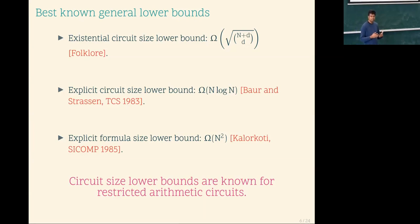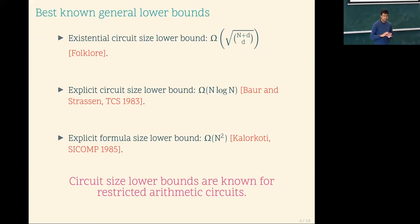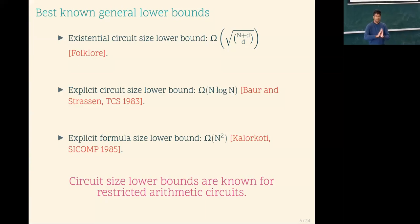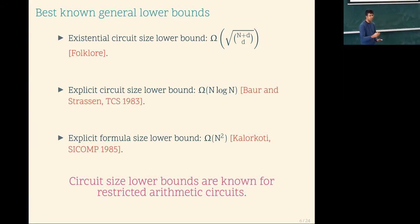Under arithmetization, the arithmetic circuit computes a polynomial that matches the function on 0-1 inputs; the rest we don't care about. You can think of this as working over F2 quotiented by x²−x. People said: let's drop the quotienting and look at algebraic circuits over fields. Maybe we can come up with lower bounds over computation of polynomials syntactically, and then come back to Boolean circuit complexity. The first step is proving circuit size lower bounds in the algebraic setting.